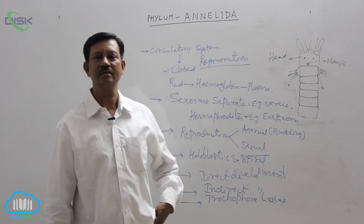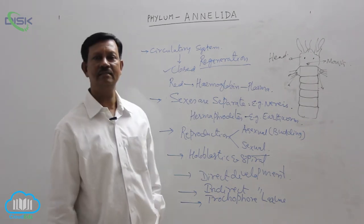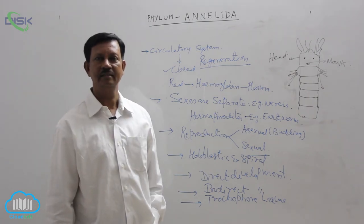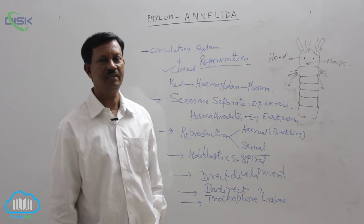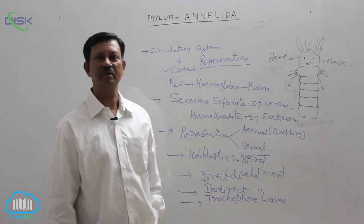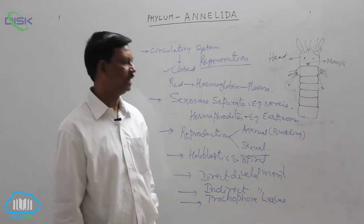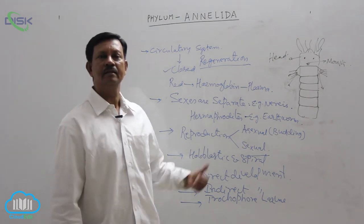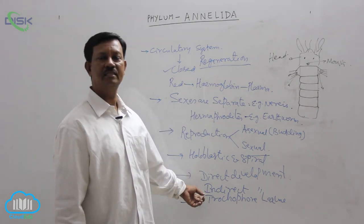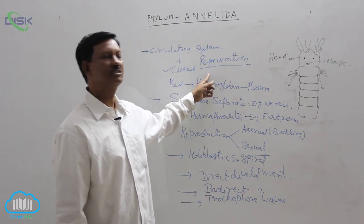Different types of locomotory organs are present, like setae, parapodia, and suckers (as in leeches). Respiratory organs include gills; parapodia also help in respiration. Excretory organs are nephridia, which help in osmoregulation and removal of nitrogenous waste. In the nervous system, a nerve ring at the anterior region and a ventral nerve cord are present, which control and coordinate all body activities. Sexes are separate, and development includes a trochophore larva in some animals. Regeneration is also present. These are the main characters of phylum Annelida.